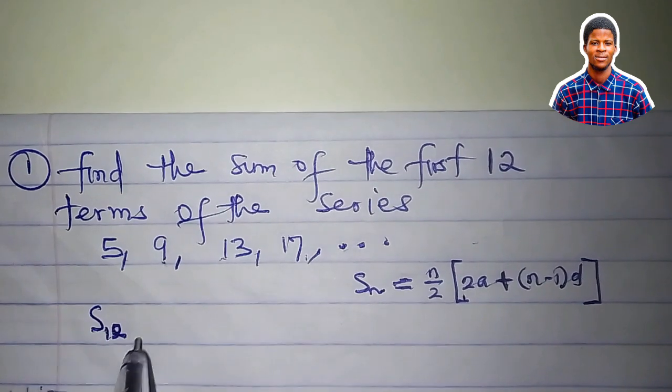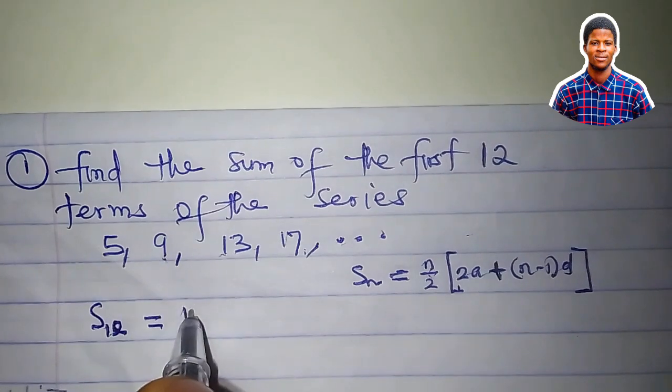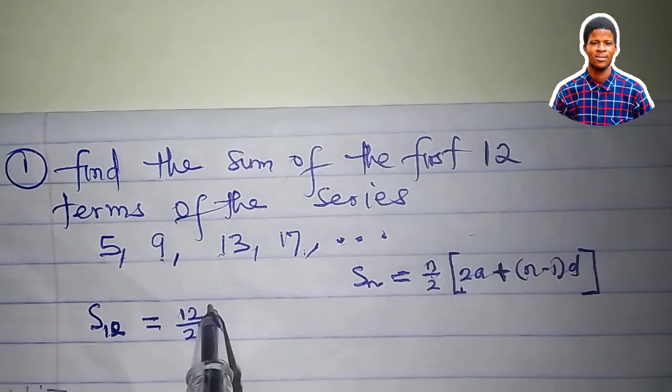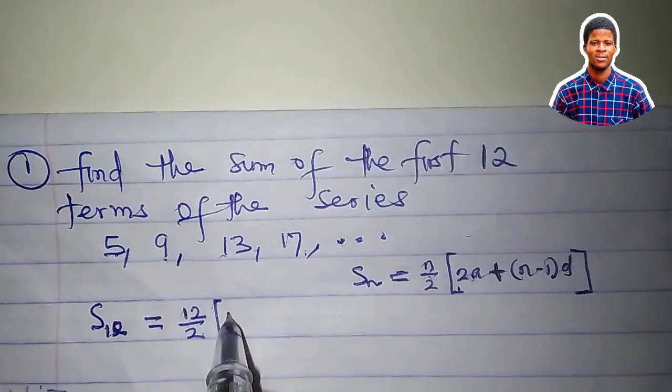We are looking for the sum of the first 12 terms. S_12 equals, n is 12, 12 over 2. a is 5, that's 2 times 5, which is 10,